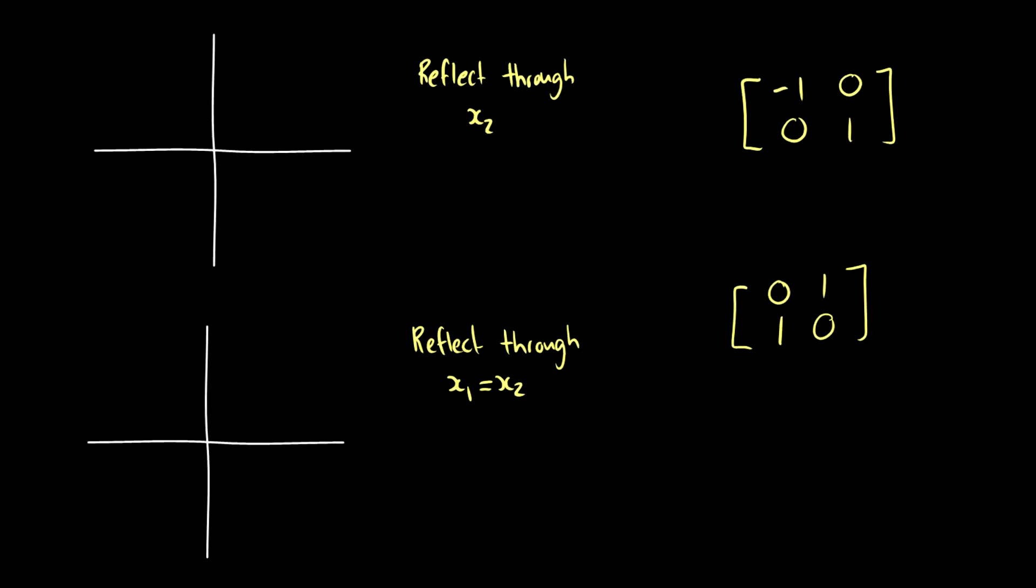Now we can reflect through the x2 axis. Instead of taking -1x2, we just take -1x1 there and leave x2 the same. So now we get a reflection on this side, so the box flips over there. Those two are pretty straightforward.